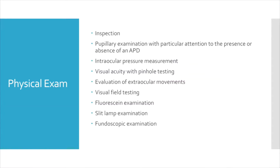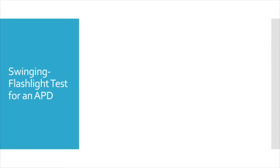Physical exam should start with a general inspection. A thorough pupillary exam should be done with particular attention to the symmetry of the red reflexes. Next, a swinging flashlight test should be performed to evaluate for an afferent pupillary defect, demonstrated by shining a light alternately in one eye and then the other in a dark room, with the subject fixating on a distant target to prevent accommodative miosis. If the direct response to light is sluggish in one eye, this is positive for an afferent pupillary defect in that eye.